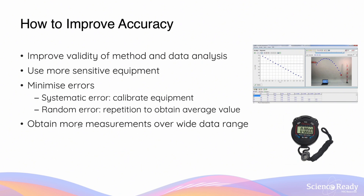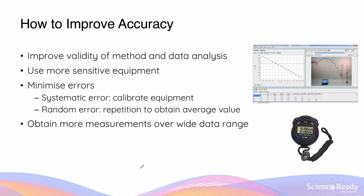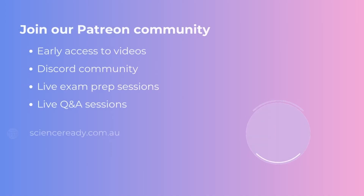In some cases, particularly in physics experiments where you're identifying the relationship between two variables, accuracy can also be improved by obtaining measurements of independent variables over a wider data range. For example, in the pendulum experiment, instead of measuring string lengths of 1, 1.1, and 1.2 meters, you could broaden the range to 1, 2, and 3 meters. This is because the true relationship between variables may not be accurately determined over a narrow range.